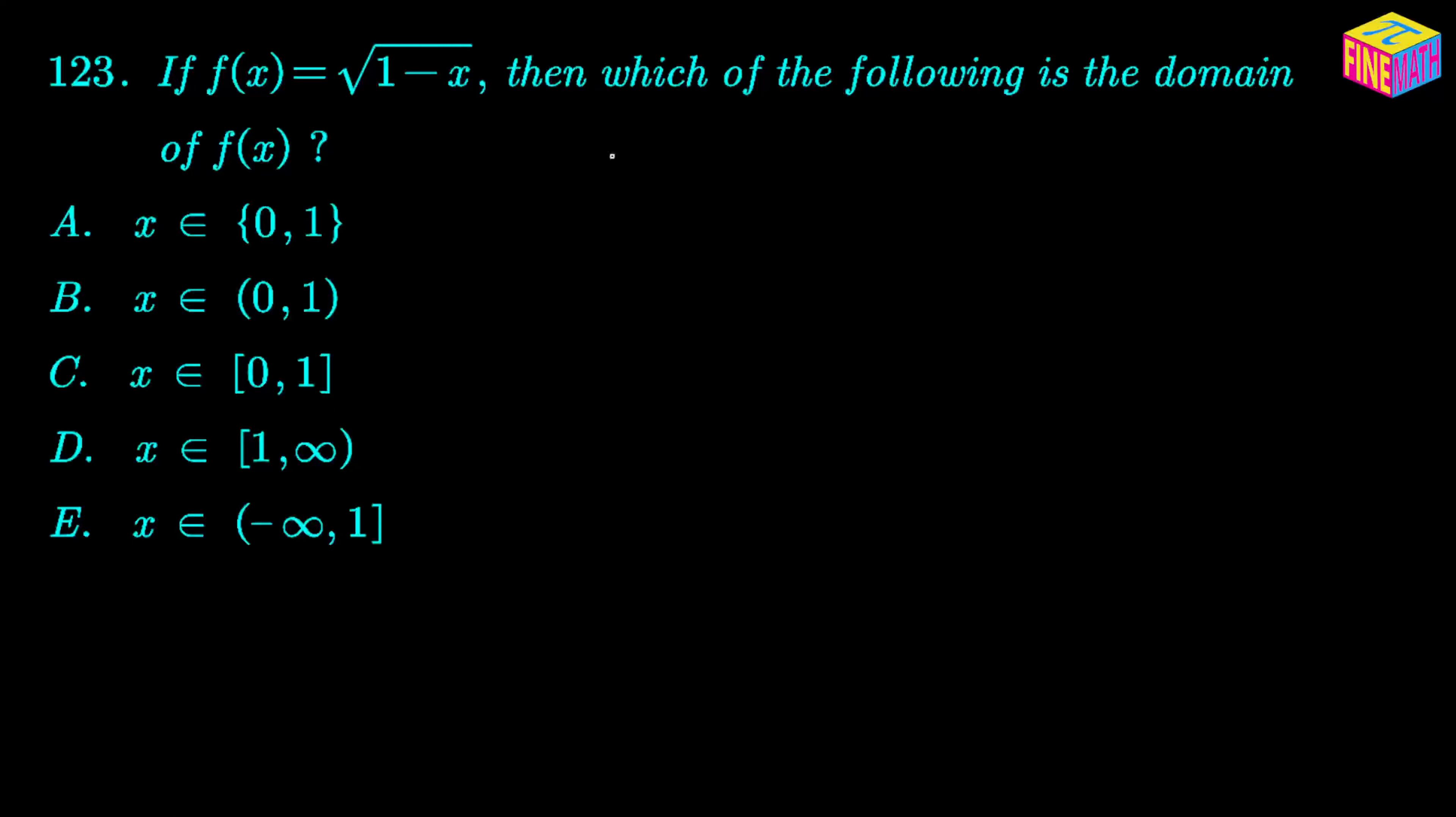So then from here we can say well definitely 1 minus x has to be greater than or equal to 0, and from here we can say then x must be less than or equal to 1. And in that case what would be that range? If it has to be less than or equal to 1, then x should belong to the range of real numbers that will look like this.